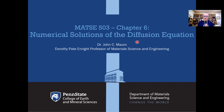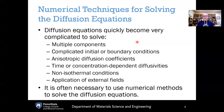Diffusion equations can quickly become very complicated if they're involving multiple components, which involves matrix mathematics, as we saw last time in Chapter 5. There can be very complicated initial or boundary conditions or complicated geometries. There can be anisotropic diffusion coefficients, time and/or concentration-dependent diffusivities, non-isothermal conditions, applications of external fields. There are all kinds of reasons why diffusion equations can become rather complicated, and as a result, it is often necessary to use numerical methods to solve the diffusion equation.